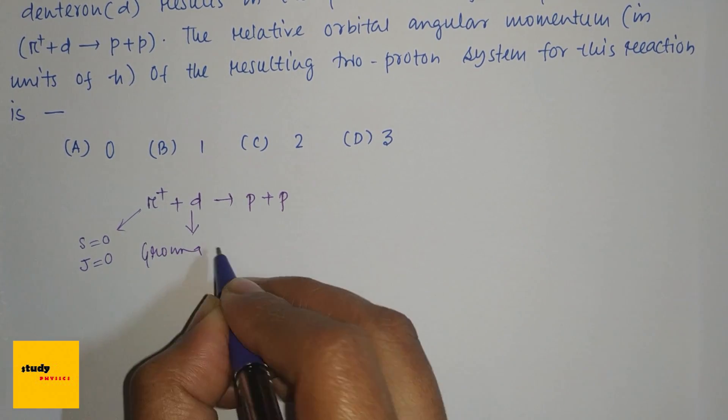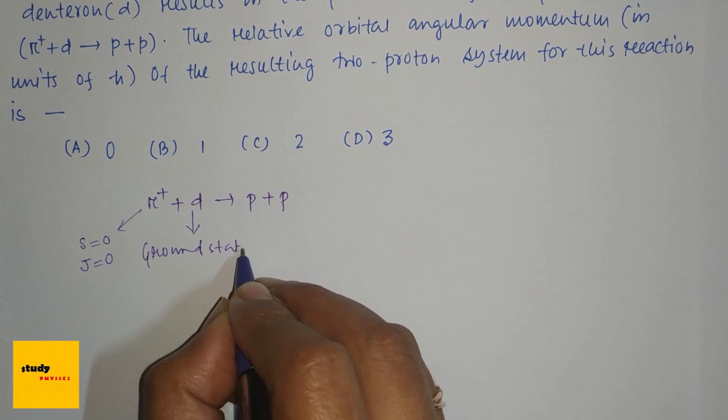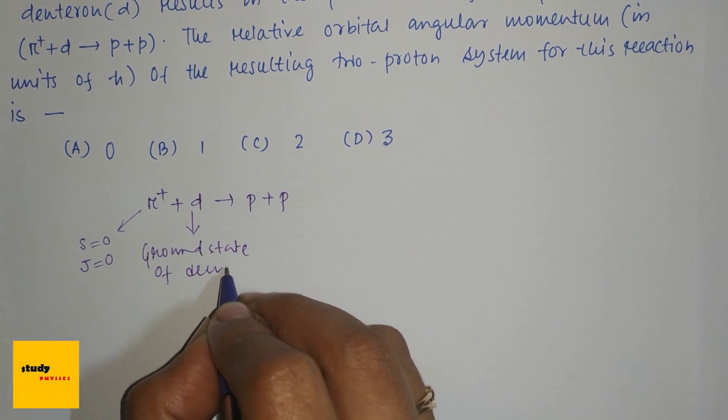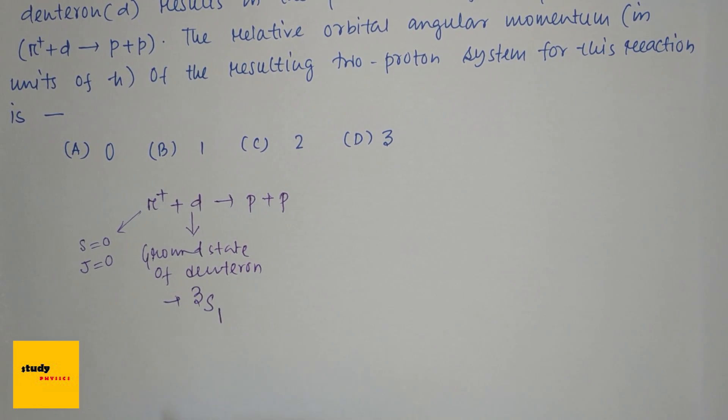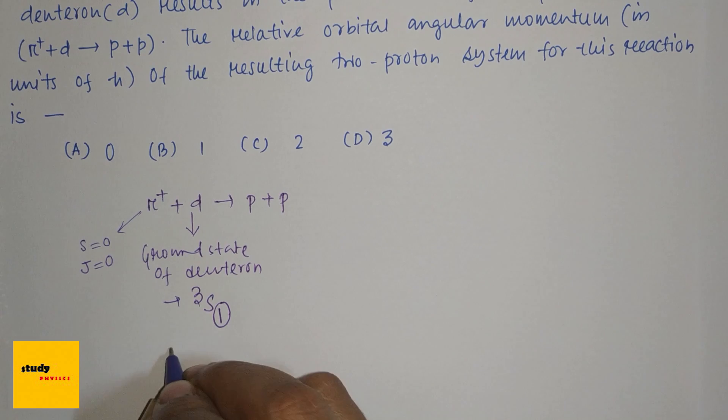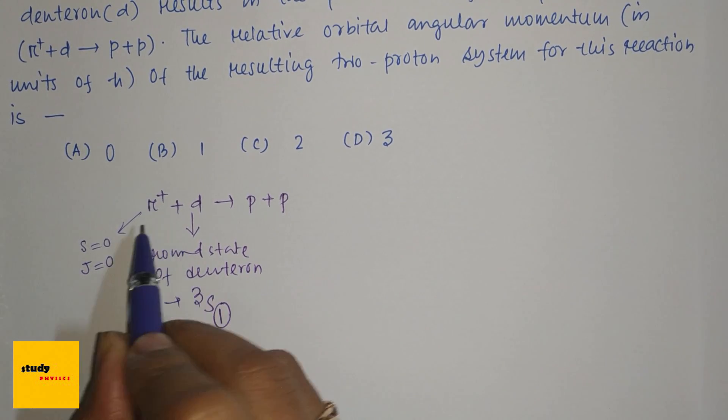For deuteron (d), we know the ground state of deuteron is ³S₁, and here the total angular momentum J is 1.